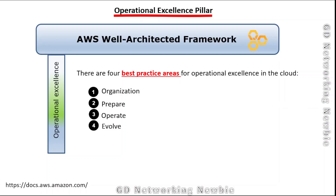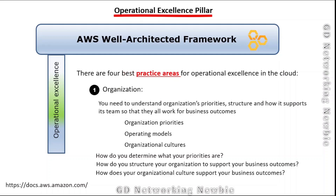Operational excellence also provides four best practice areas, each with foundational questions that give context and best practices. These areas are: organization, prepare, operate, and evolve. The first best practice area is organization — we need to understand the organization's priorities, its structure, and how it supports teams to achieve business outcomes.